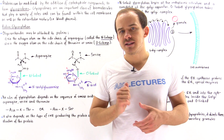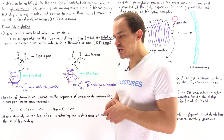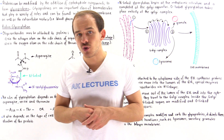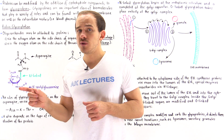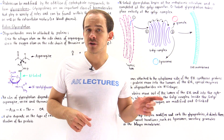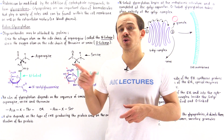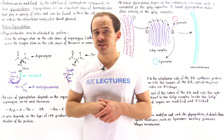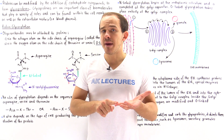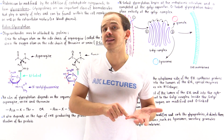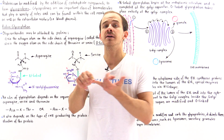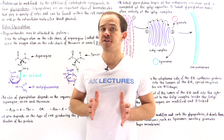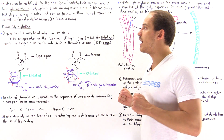Previously we also discussed proteoglycans, which are also an example of biological molecules that contain a protein component as well as a sugar component. The difference between a proteoglycan and a glycoprotein is that in the case of glycoproteins, the sugar component makes up a much smaller percentage by mass of the biological molecule than compared to the proteoglycan.